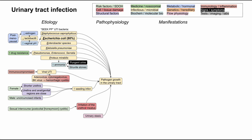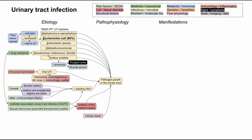A few things cause irritation of the urethral meatus. First, sexual intercourse — also called postcoital cystitis or honeymoon cystitis — where heat and fluids can irritate the urethral meatus and seed an infection. There are also catheter-associated urinary tract infections (CAUTIs), common in hospitalized patients. Catheters in for a long time, say a week or so, can irritate the urethra and seed infections, and CAUTIs are associated with increased drug resistance and organisms like Pseudomonas.